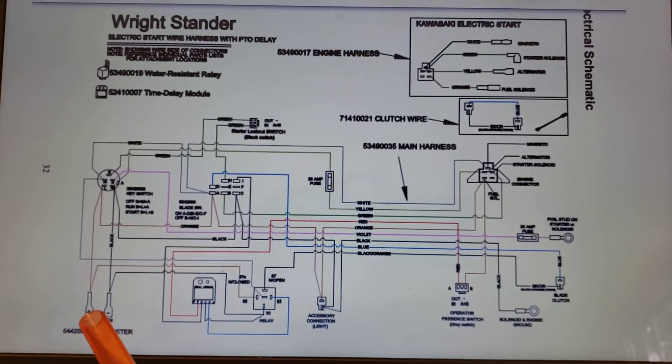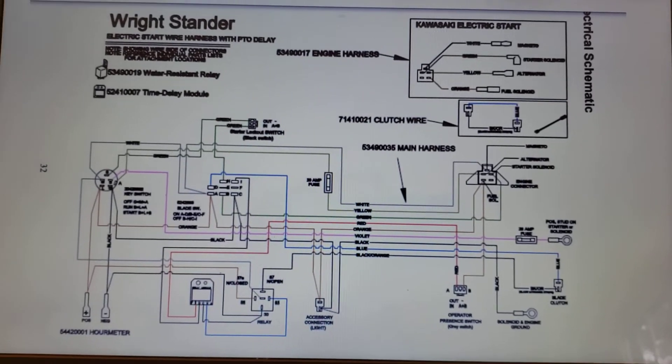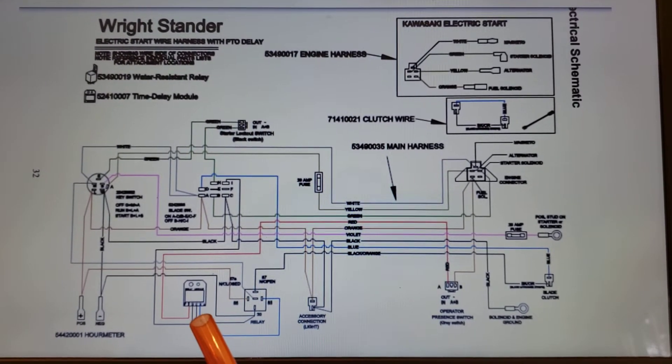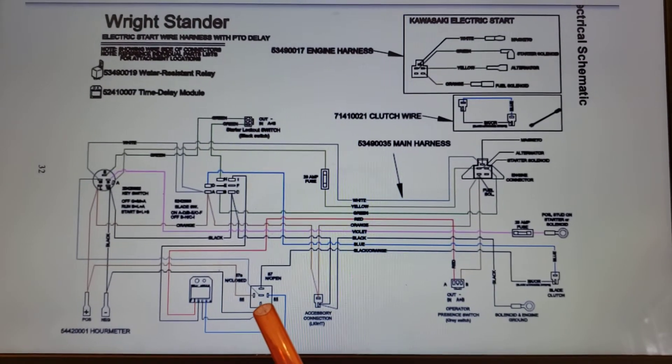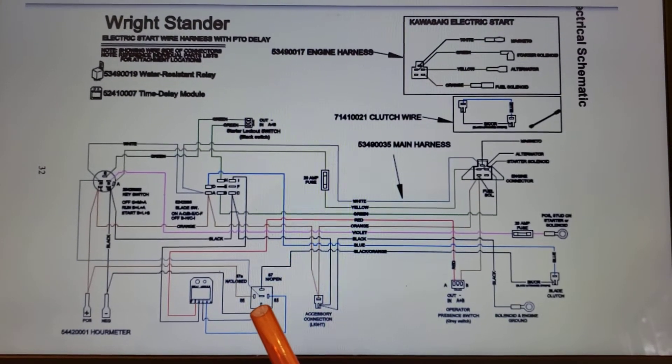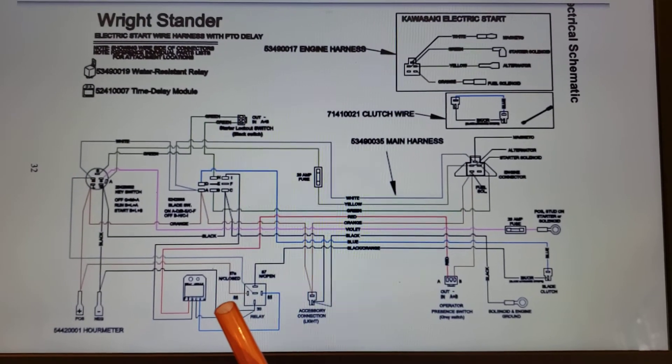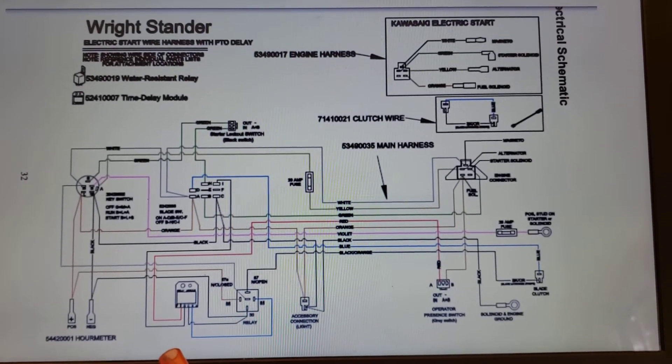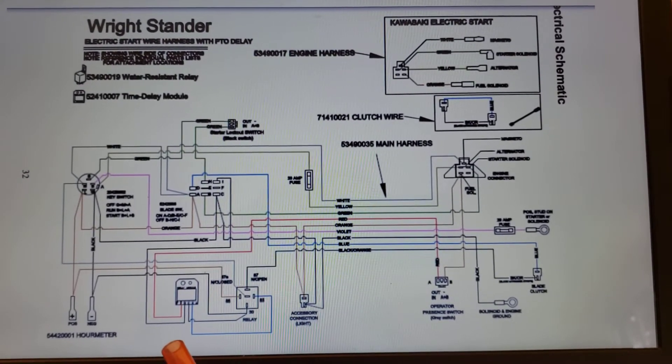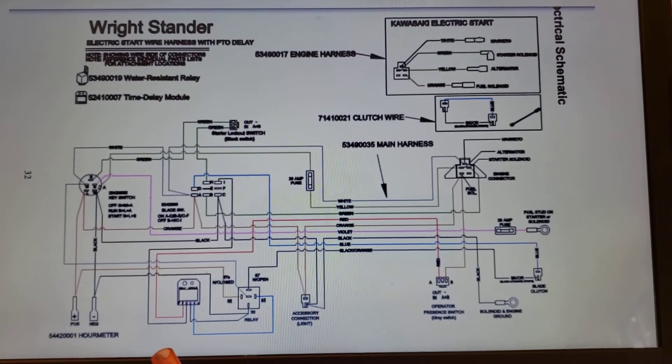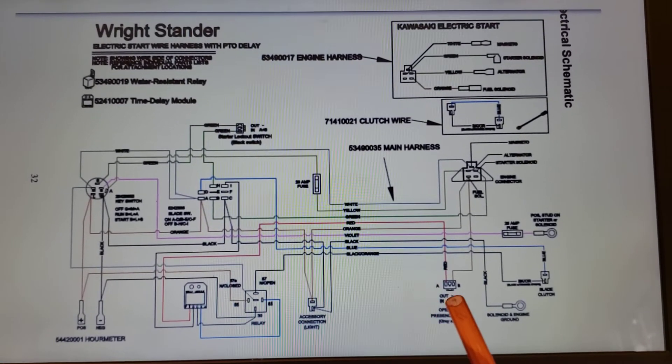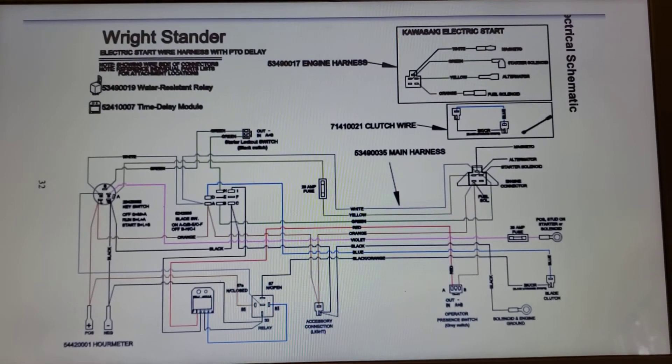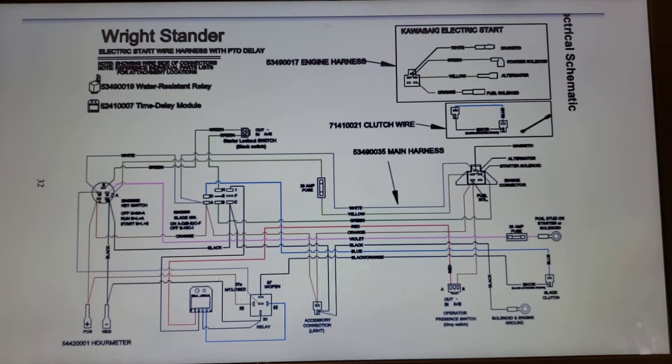Down here we've got an hour meter which keeps track of the number of hours of run time. Here between this delay module and that clutch relay, safety relay, those work together to make sure that the operation of the clutch is safe and protects the operator. There's also an operator present switch over here that needs to be enabled properly for the blades to turn on.